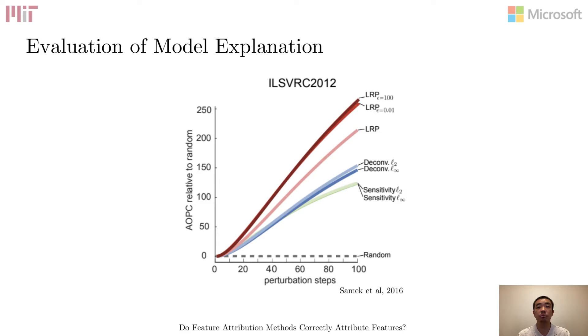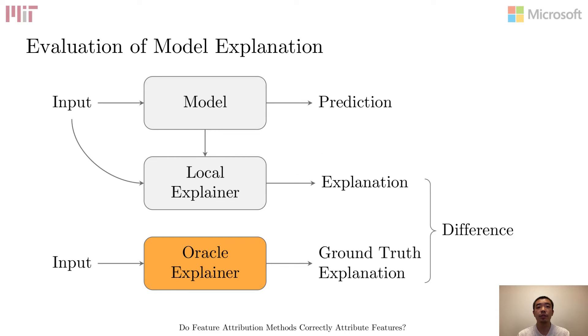There are some other proposals, such as evaluating feature attribution by how much the model prediction changes when the most important features are withheld. However, they all have certain drawbacks that lead to the rejection of correct explanations or the acceptance of incorrect ones, as discussed in detail in the paper. Fundamentally, the problem is that we do not have the ground truth feature attribution to compare against. In fact, trying to acquire it is the exact purpose for all explainers, so the task of evaluating them sounds like a circular argument, unless we can somehow specify the ground truth explicitly.